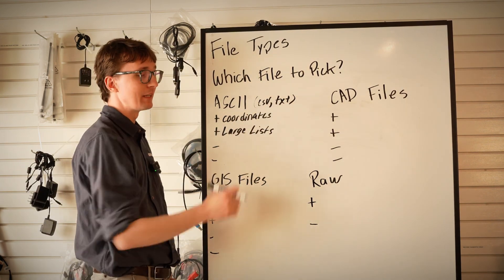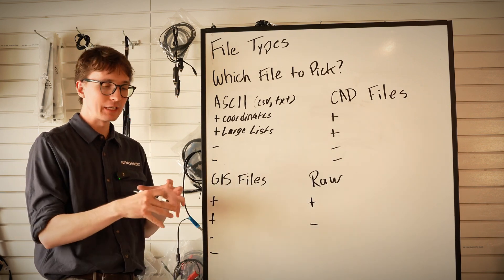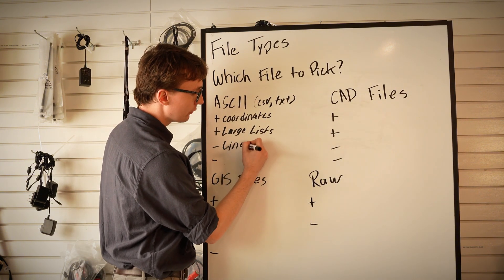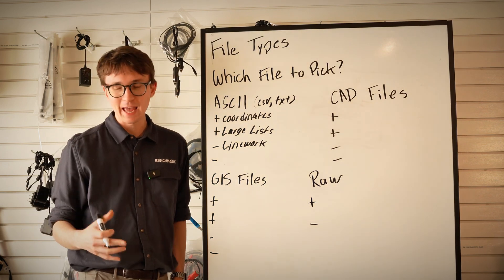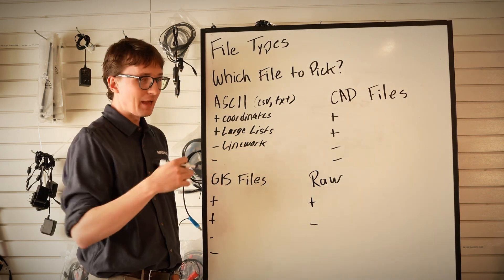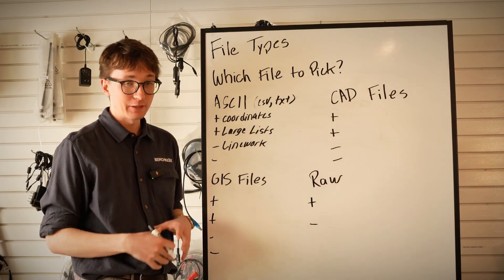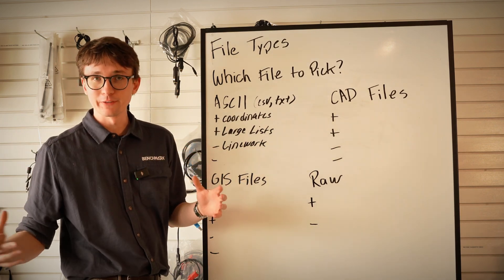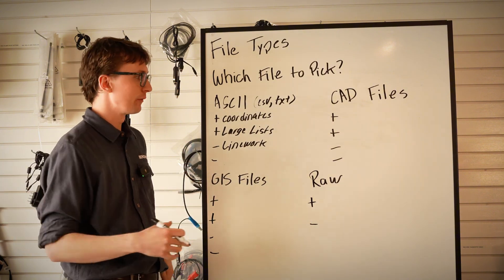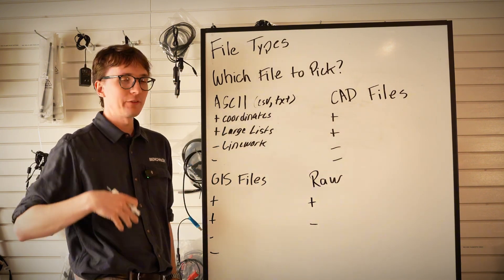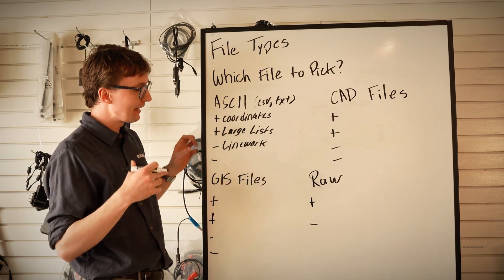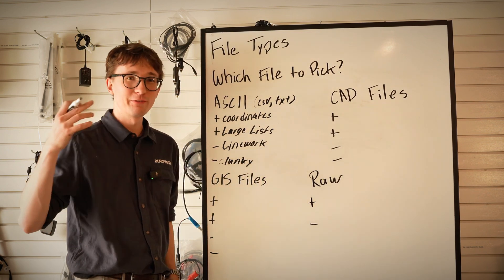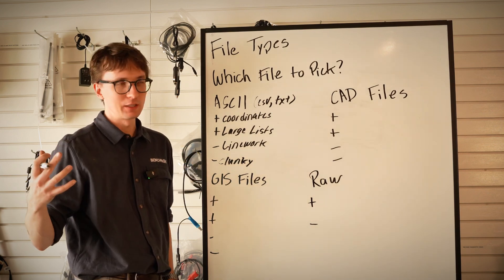However, because you're bringing in a simple CSV or text file, you can only contain information related to a single point. You're going to lose all line work information if you're pulling this out of CAD. The other thing to consider is this is very dependent on how it's set up — if someone manually enters coordinates backwards or doesn't check that headers are properly formatted, it can lead to issues. You can handle large lists and coordinates will be in there, but you'll lose your line work and it can become quite clunky and cumbersome to work with.